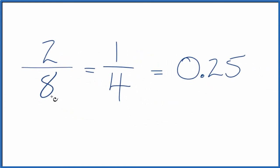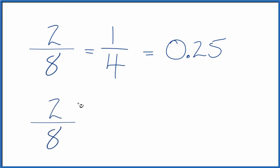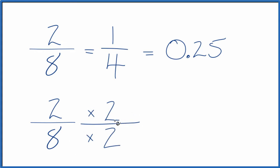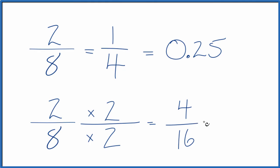We could also take 2/8 and instead of dividing to simplify, we could multiply. We could multiply by 2 over 2 — that's just 1, since 2 divided by 2 equals 1. Now we have 2 times 2, which gives us 4, and 8 times 2, which gives us 16. So 4/16 is another equivalent fraction to 2/8 and 1/4.